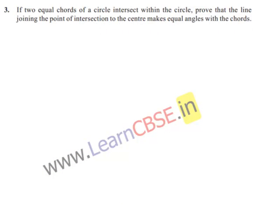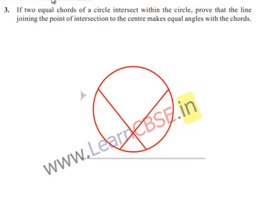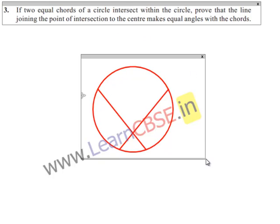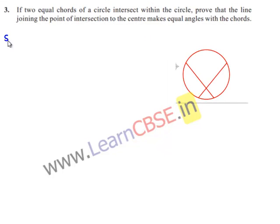Now moving on to the solution, let us consider a circle with two equal chords in it. So in the solution, we have considered a circle with center O and two equal chords, that is AB and CD, intersecting at point E.